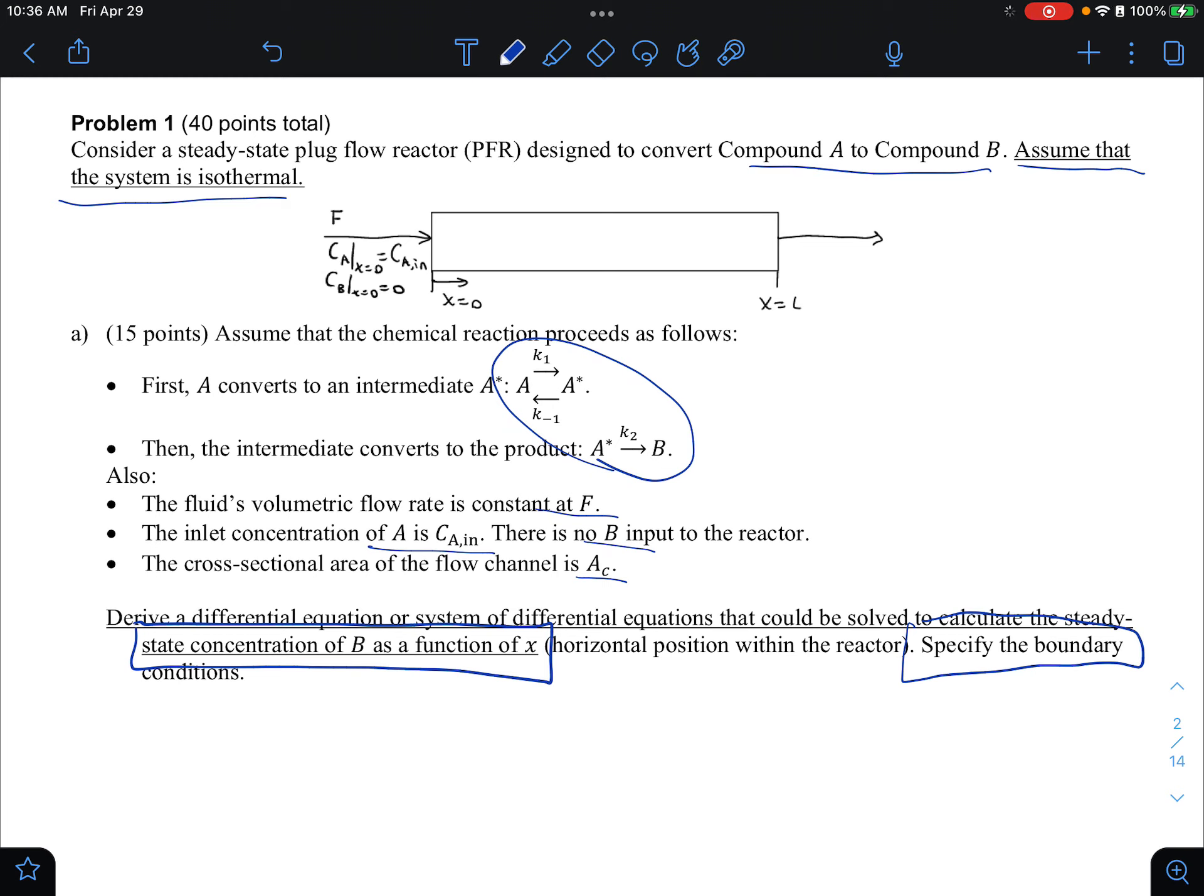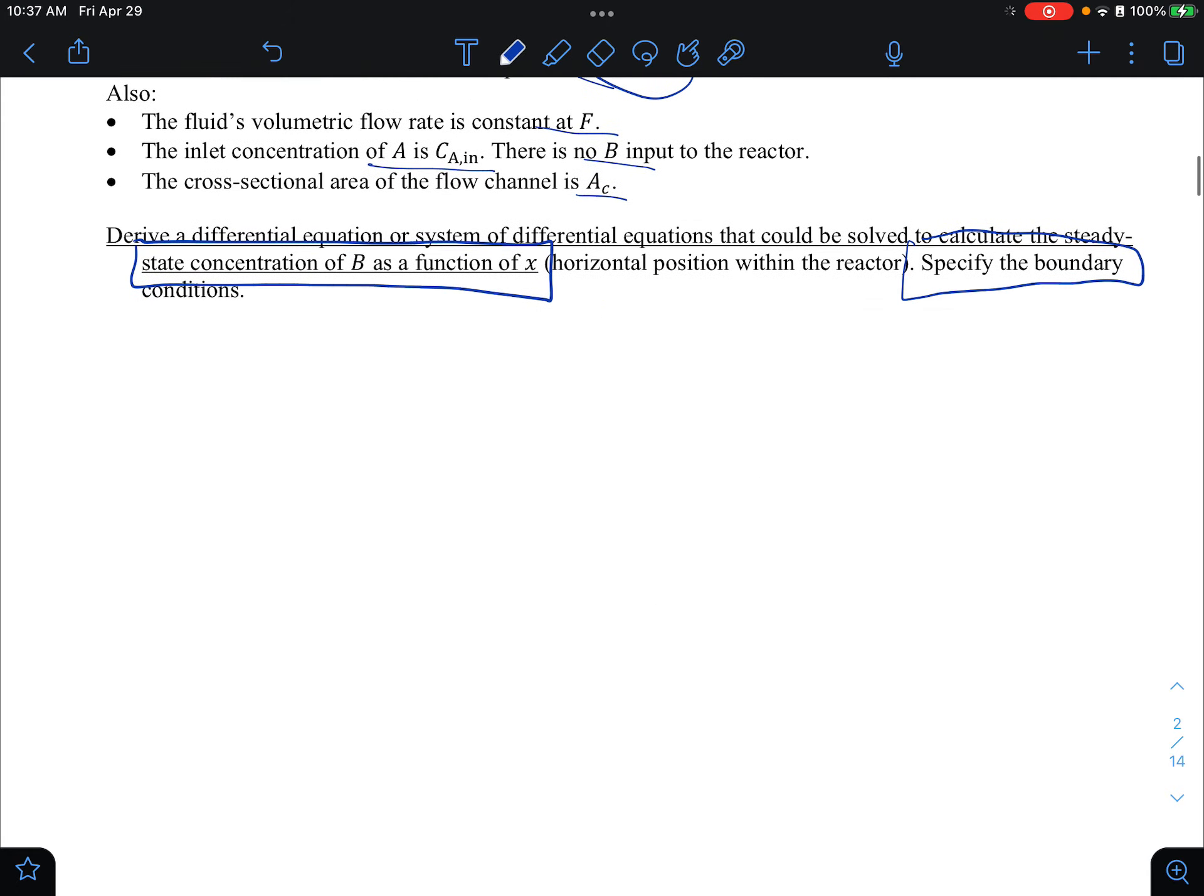And from homework, you probably would remember that it's very important to define a control volume. Since your concentration is varying with X, I'd make a differential control volume between X and X plus delta X. So I see a lot of students on these exams who don't actually bother to draw the control volume, and I think that can be a mistake. So you want to show your thought process. So I'm not going to do the balance just yet. I'm going to go to the next part.